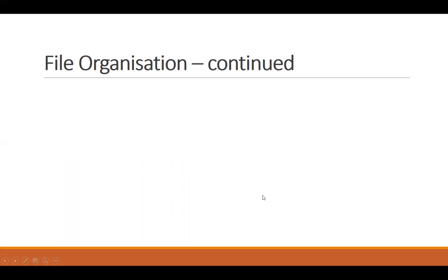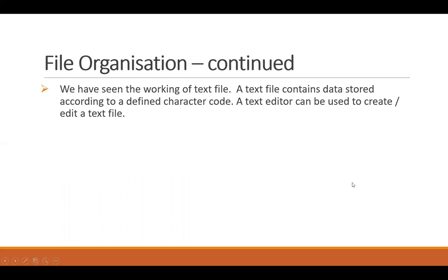Each file has its own architecture. We would limit our discussion right now to binary files and text files. Text files are actually a collection of text characters according to some predefined coding scheme, like the ones we studied in Chapter 1 of AS, like ASCII and Unicode. The characters were converted using those coding schemes and stored in the computer. A text editor can be used to create or edit those kinds of files.